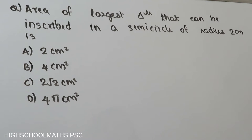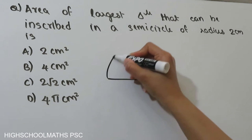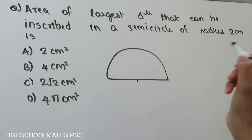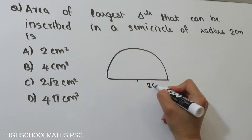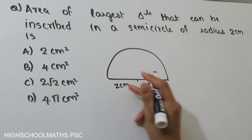Here is a semicircle of radius 2 centimeters. We can look at the figure — a semicircle. The radius is 2 centimeters on this side and 2 centimeters on the other side. Here we can see the center.